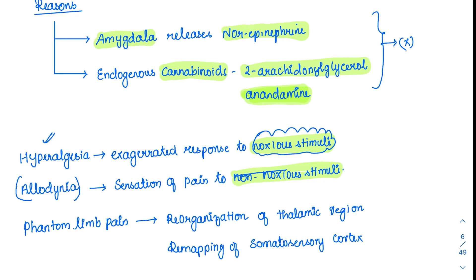Phantom limb pain occurs after amputation: when the stump region is stimulated, the patient feels as if the amputated limb is still present. This is due to reorganization of the thalamic region — the thalamus that previously responded to the amputated limb now gets stimulated by stump stimulation — and remapping of the somatosensory cortex. This phantom limb pain will be further discussed in sensory physiology.